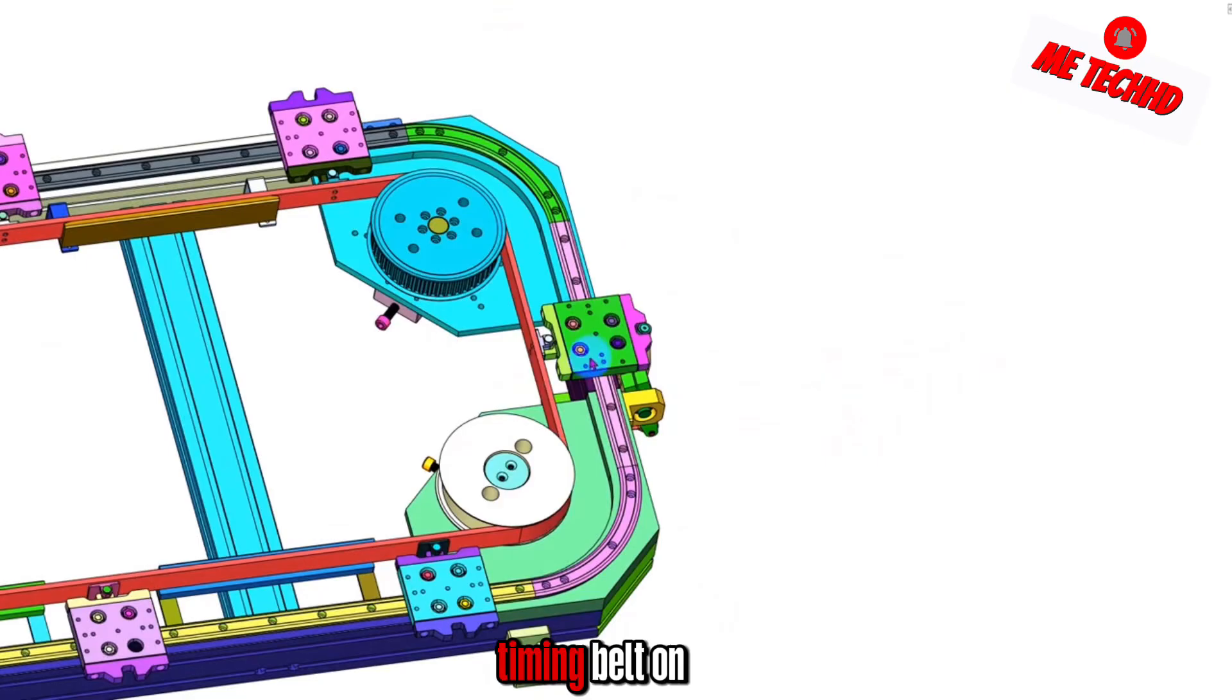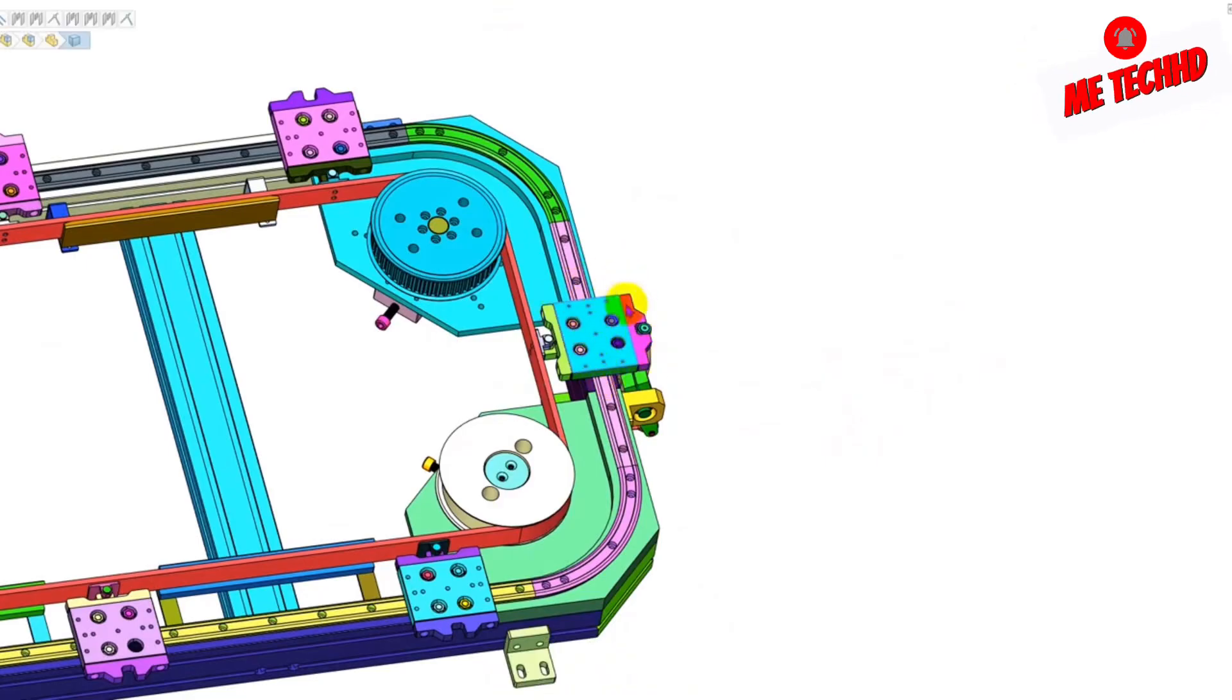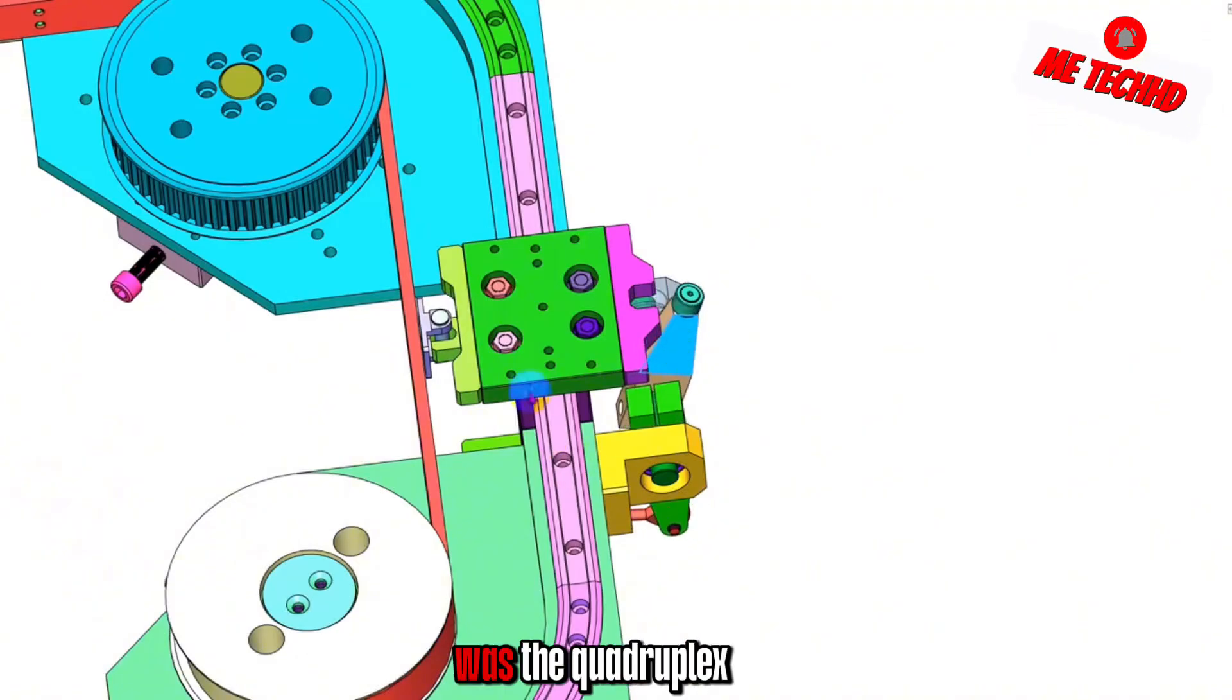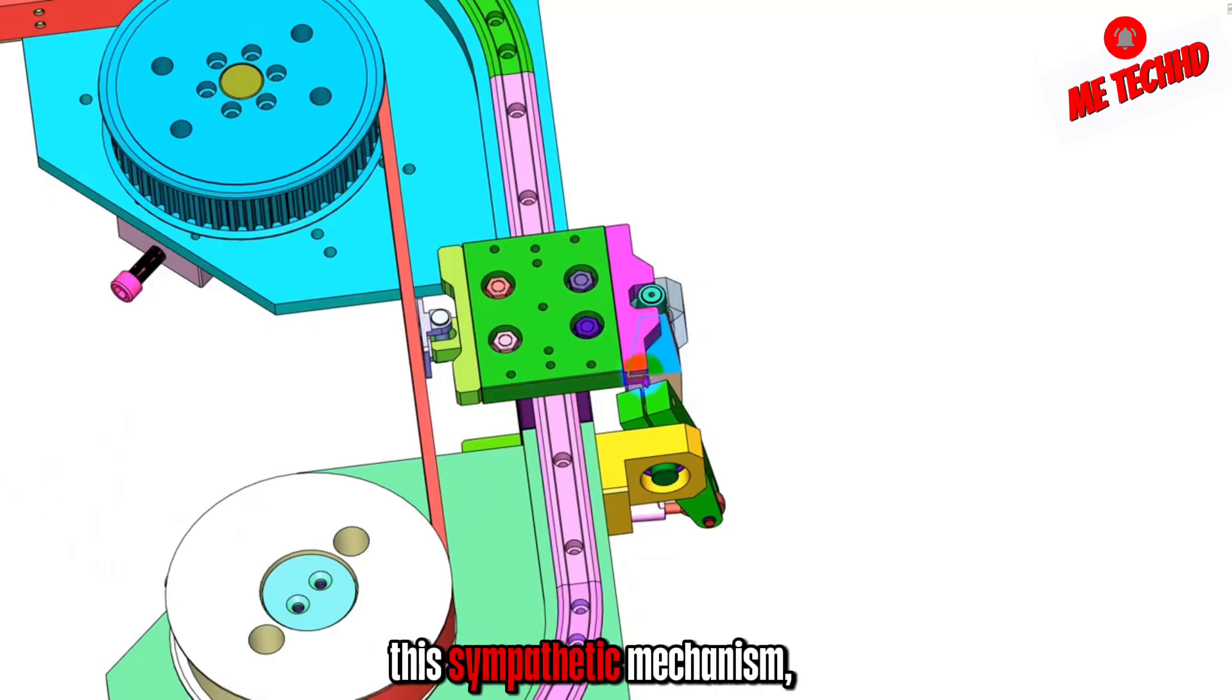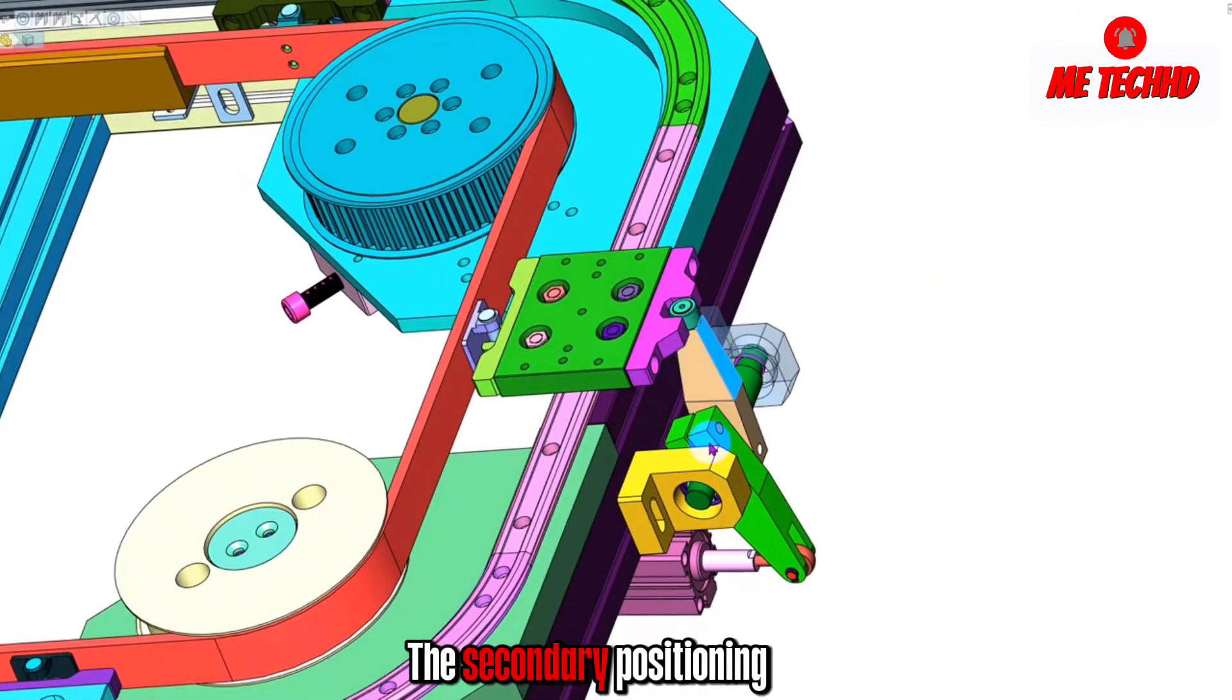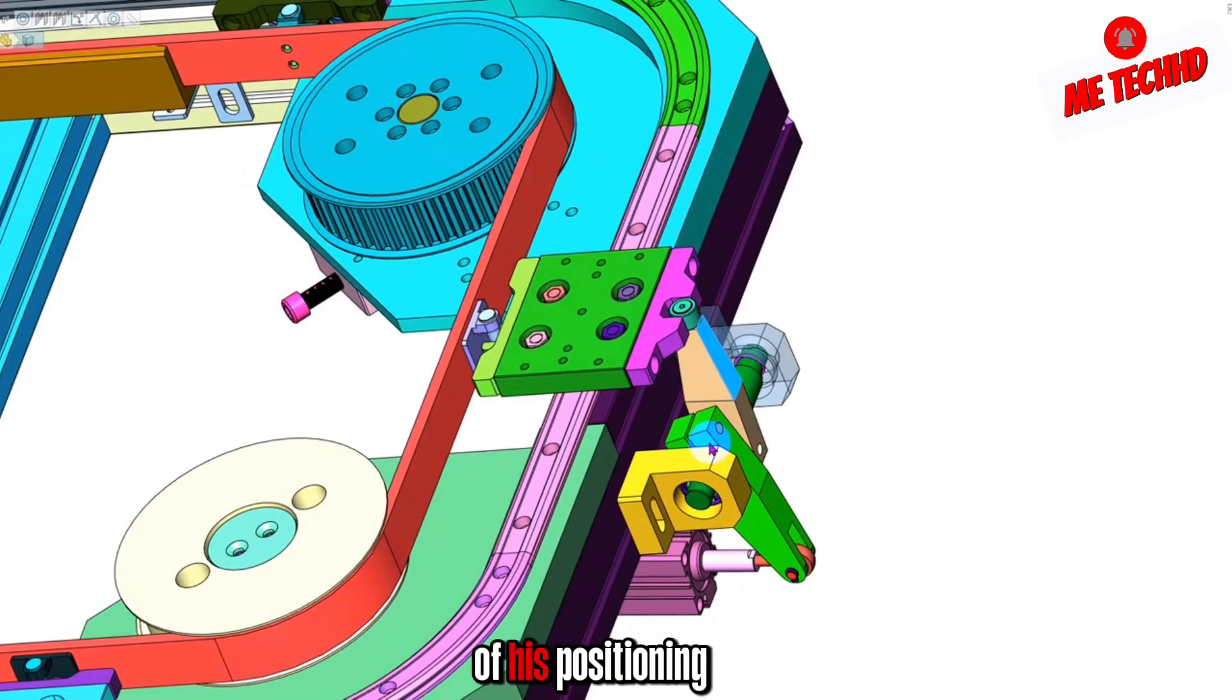Is there a timing belt on his side that conveys this slider? But when we asked him to locate it, it was the quadruplex to locate it once. Then, if this S-cylinder pushes this sympathetic mechanism, it can achieve secondary positioning. The secondary positioning can improve one of his positioning accuracy.